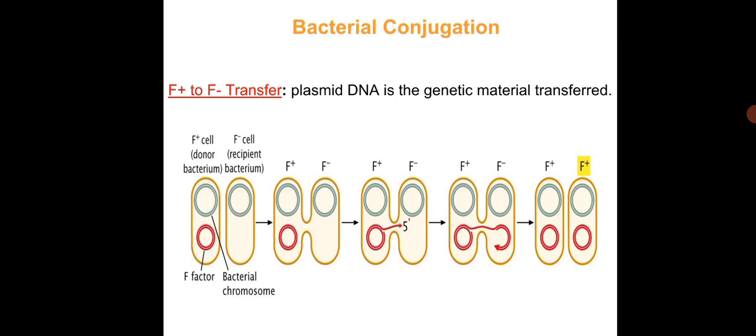During conjugation, F+ bacteria synthesize a pilus called the F or sex pilus, which can attach to F− bacteria, allowing genetic material to transfer. One strand of the F+ plasmid DNA is nicked and passed to the recipient F− bacterium, where a complementary strand is then synthesized.